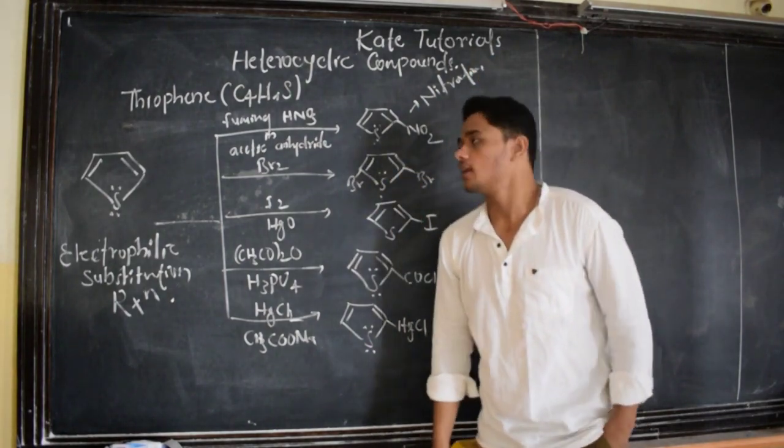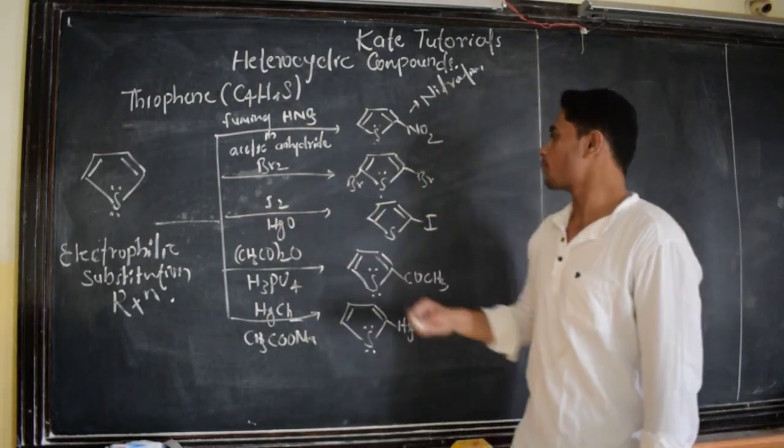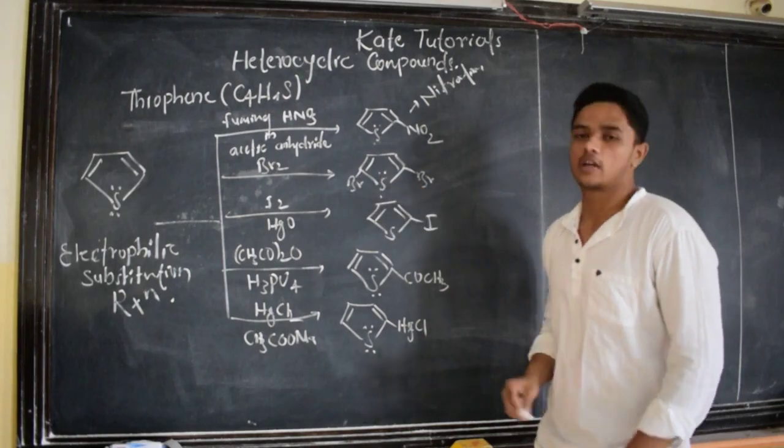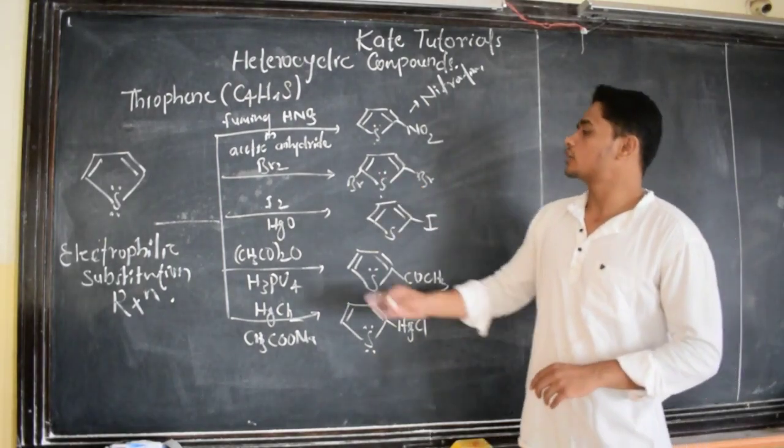When the same thiophene is treated with bromine, that is bromine water, we are going to get 2,5-dibromothiophene. This is bromination and also iodination.